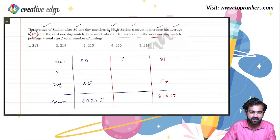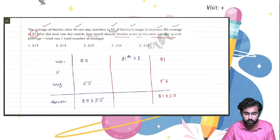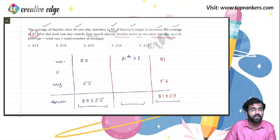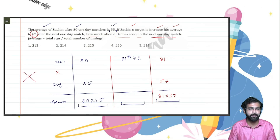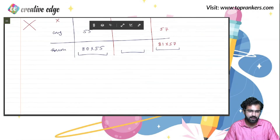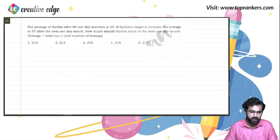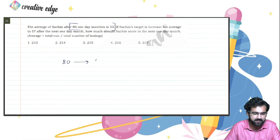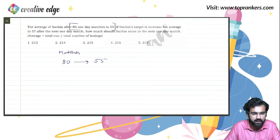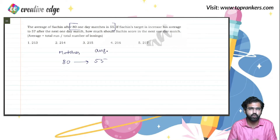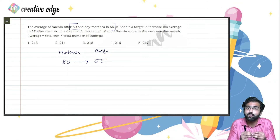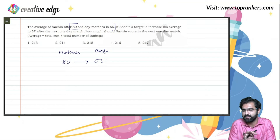Let's use the intuitive approach. In 80 one-day matches, Sachin maintained an average of 55, meaning on average he scored 55 runs in each match. This average of 55 can be equally distributed among all the matches. Now in the 81st match, he wants to increase his average by 2 runs — he wants to take it from 55 to 57.